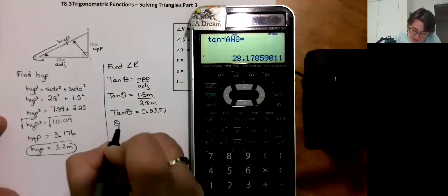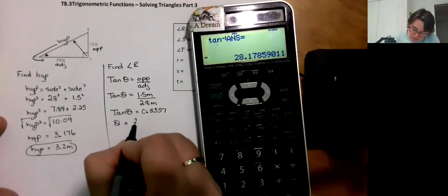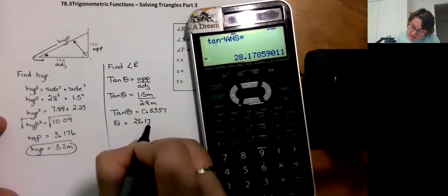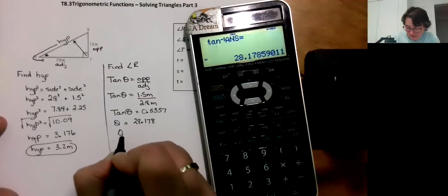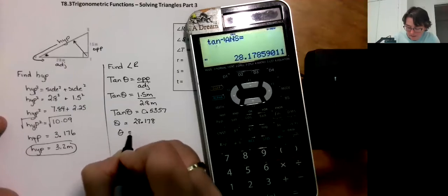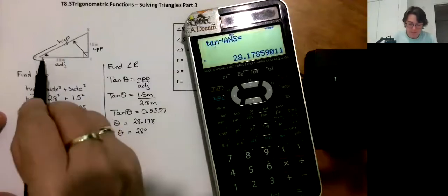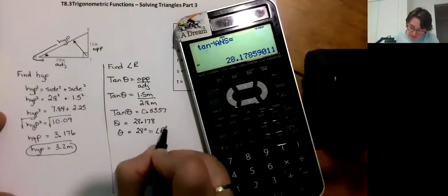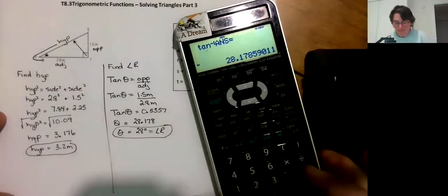So theta is equal to 28.1784. 28 degrees. But we were doing angle R.